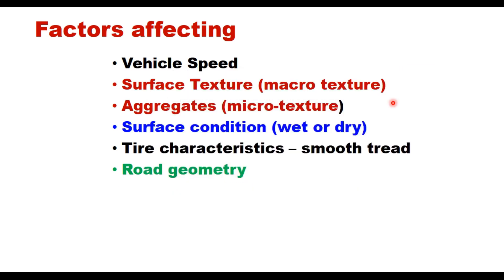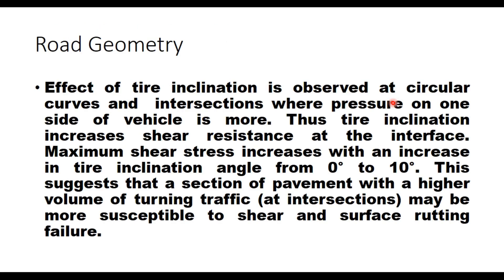Finally, road geometry — specifically the effect of the inclination of the road surface, particularly at circular curves or intersections where pressure on one side of the vehicle is greater. When a vehicle turns on a horizontal curve, there is a difference in pressure on the two tires, causing inclination of the tire. Maximum shear stress increases with an increase in tire inclination angle from 0 to 10 degrees. This suggests that sections with a higher volume of turning traffic, such as intersections, may be more susceptible to shear and surface rating failure.